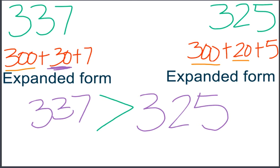After we knew that there were more tens in 337, did we need to look at the ones? No. Because if there are more tens, then we know that the number is larger, because tens are worth more than ones. When we are going to compare numbers, we should start with the digits in the largest place value first.